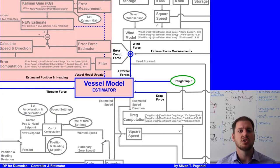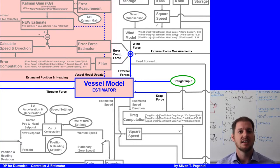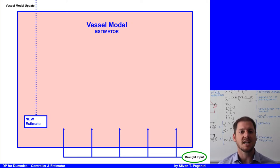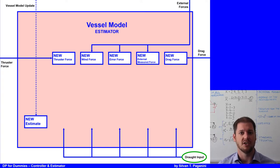We now leave the area of the controller and concentrate on the vessel model — the estimator. We now have all ingredients to explain how the estimator calculates the new estimate for the next calculation cycle. Since it is an extended Kalman filter, the estimator adds more to the new estimate — specifically the residuals from thruster force, wind force, aero force, external measured force, and drag force.